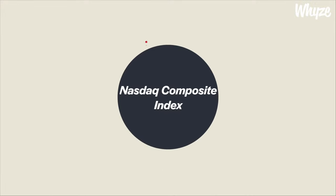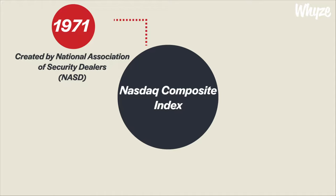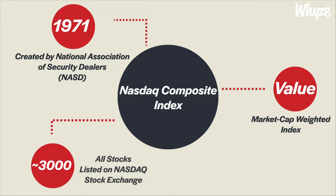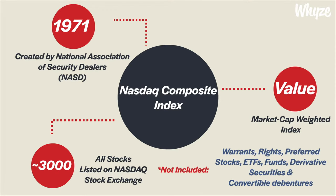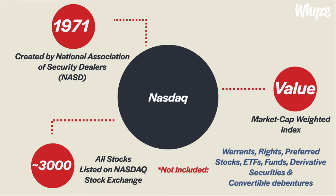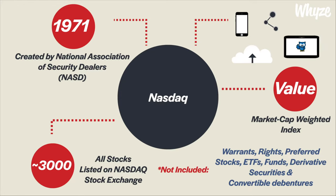Last but not least, the NASDAQ Composite Index was created in 1971, making it the newest of the three. The NASDAQ Composite is a market capitalization-weighted index including roughly 3,000 securities listed exclusively on the NASDAQ stock exchange, meaning stocks within it can be headquartered outside of the U.S. but must be listed on the NASDAQ. The NASDAQ Composite includes all stocks on the NASDAQ stock exchange unless they are warrants, rights, preferred stocks, ETFs, funds, derivative securities, or convertible debentures. The NASDAQ Composite is known for being majority technology stocks, including small speculative technology companies that have relatively higher risk and reward.